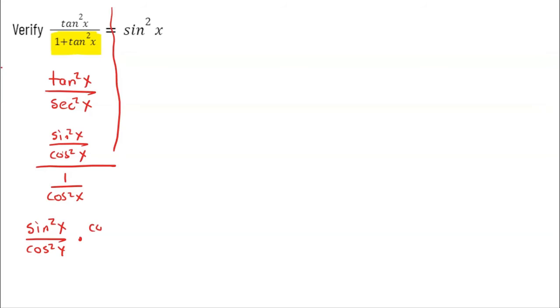And just like that, I'm about done because those cosine squareds are reduced to a one. And then I just get a simple sine squared of x, which is exactly what I was trying to verify. There we go.